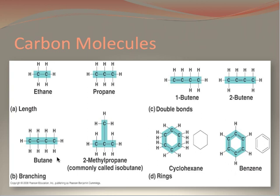Both ethane and propane are single bonded molecules. Butene are double bonded molecules. And butane exhibits the branching of bonds. And the aromatic rings here are found in both cyclohexane and benzene.